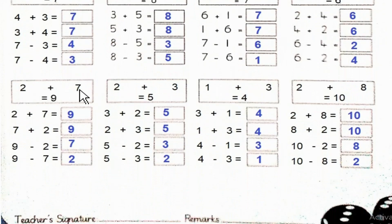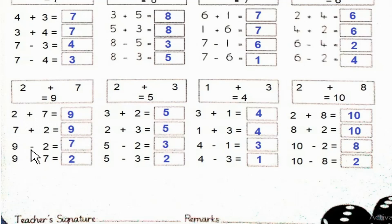2 plus 7 is equal to 9. 7 plus 2 is also equal to 9. 9 minus 2 is equal to 7, and 9 minus 7 is equal to 2.